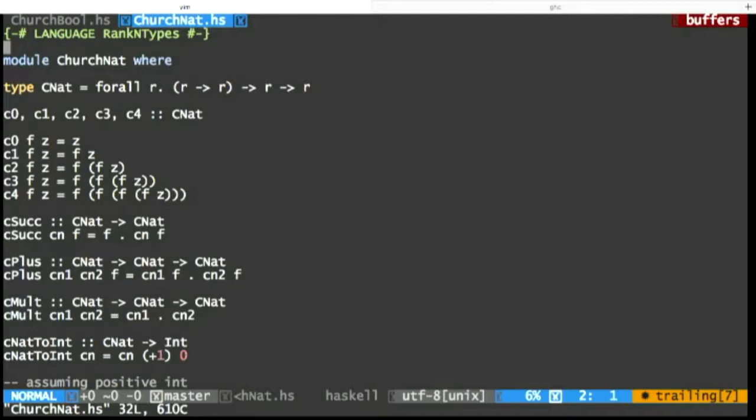And so we look at, so it takes a function and a zero value, and the definition of zero is it just ignores the function and returns zero. The definition of one, it calls the function once. The definition of two is it calls the function twice, and so on. So the church encoding of an int, or a natural number rather, is just calling a function that many times. It's just doing something that many times. And that's kind of interesting. And once again we can implement addition and multiplication and do all kinds of arithmetic just using functions without any kind of primitive idea of what addition means, or integers means, or anything like that.